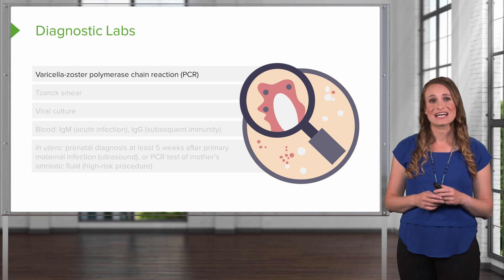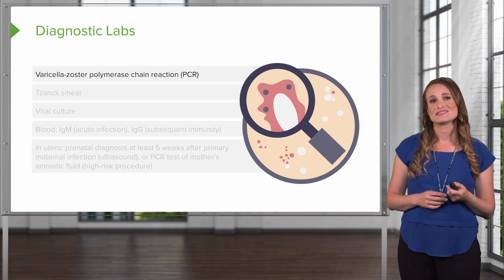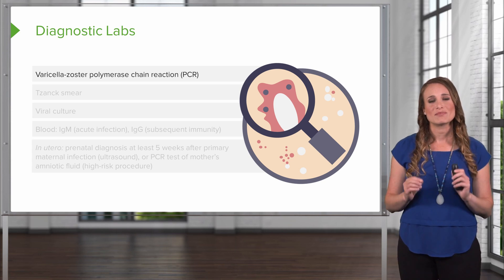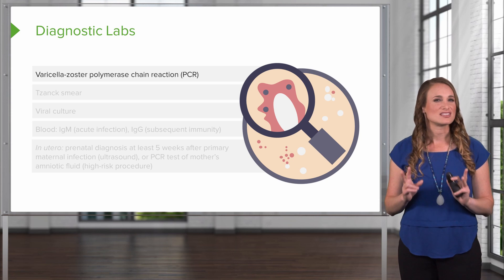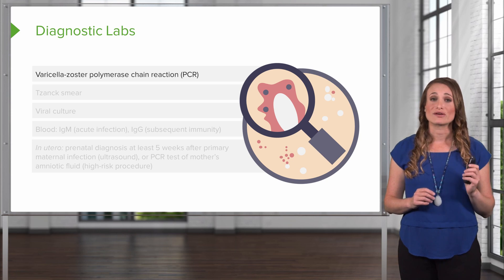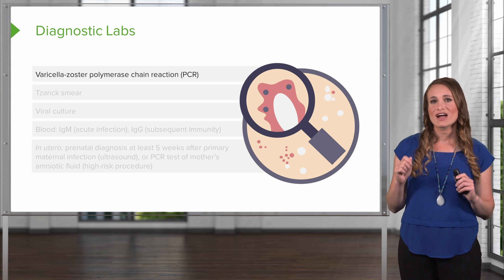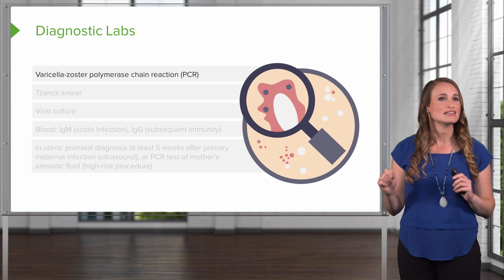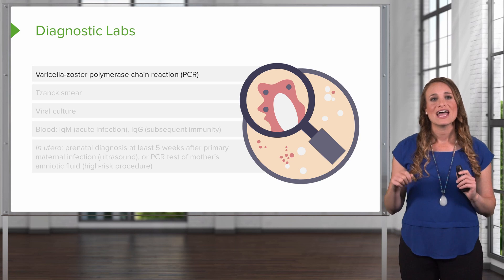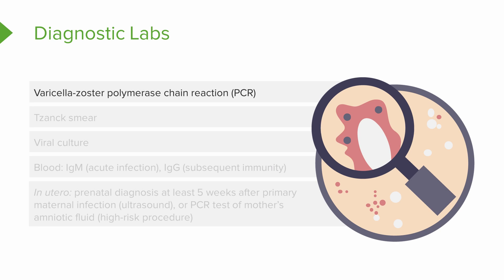There are other ways to diagnose chicken pox. You can do a varicella zoster PCR — I do this in the clinic when a patient has a lesion and the diagnosis is a little ambiguous. To do this, use a viral swab and find the really juicy lesions. They need to be unroofed, which can take some effort and be a little painful. Swab the lesion, collect the fluid, and send it to the lab — they'll be looking for varicella zoster DNA.